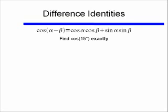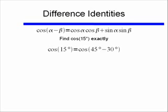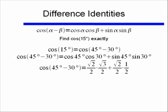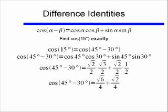Let's do one example using the difference identity: find cosine of 15 degrees exactly. We recognize that 15 degrees equals 45 minus 30 degrees — though 60 minus 45 would also work, as long as the difference is 15 degrees. Using the cosine difference formula, cosine of 45 minus 30 equals cosine 45 times cosine 30, plus sine 45 times sine 30. Plugging in the known values, we get square root of 6 over 4 plus square root of 2 over 4, so cosine of 15 degrees equals square root of 6 plus square root of 2, all over 4.